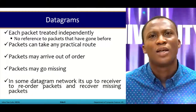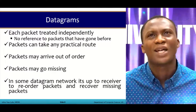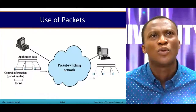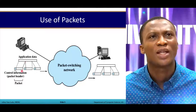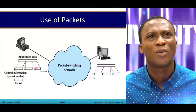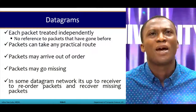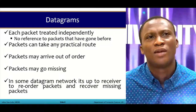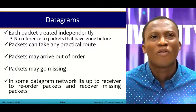In the datagram approach, each packet is treated independently with no reference to packets that have gone before. Each packet is treated differently, and once you break the main message into chunks, each packet is treated separately. Packets can take any practical route, and packets may arrive out of order. Some may also go missing, and in datagram networks it is up to the receiver to reorder packets and recover missing ones.